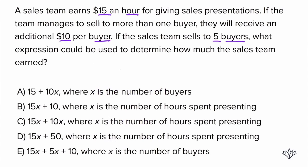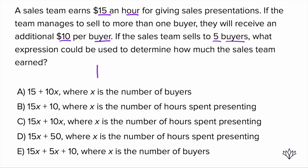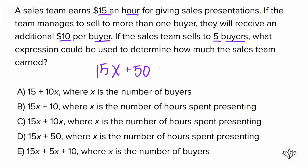Let's take a look at the answer choices. All of them are written with X as the variable, so we can just change ours — instead of H, we write X. Remember, variables can be changed; we just used H to represent hours. So we have 15X plus 50. What does X represent? Because all the answer choices also ask us what the variable actually represents. X represents the number of hours spent giving the sales presentations. The only answer choice that is 15X plus 50 is answer choice D, and it does say X is the number of hours spent presenting — which is perfect.